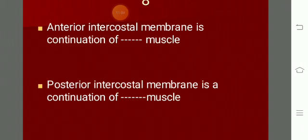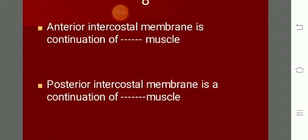The external intercostal muscle is found in the intercostal space, and in the anterior part its fibers run downwards and medially - as if putting your hands in your pocket. Once the external intercostal muscle reaches the anterior part, it is replaced by a membrane called the anterior intercostal membrane.